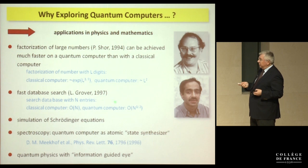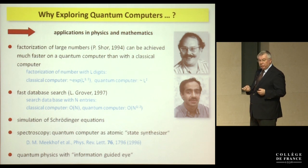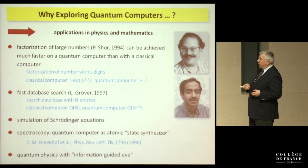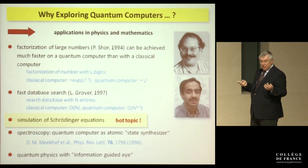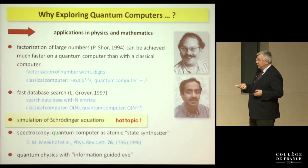Shortly after, Lov Grover from AT&T showed that even searching a database can be sped up using quantum superpositions — a quantum computer needs only the square root of the number of entries rather than the full number of queries. Personally, what I find most compelling and currently hot is the simulation of Schrödinger equations, alluded to by Feynman in the 1980s. This is something we will apply quantum computers to long before doing number crunching.